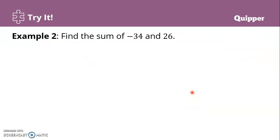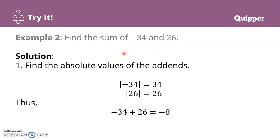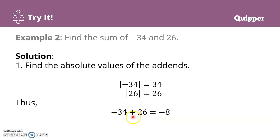Another example: find the sum of negative 34 and 26. Find their absolute values: the absolute value of negative 34 is 34, and the absolute value of 26 is 26. We have negative and positive, so different signs — we subtract. 34 minus 26 gives us 8. Copy the sign of the larger absolute value, which is negative. So the answer is negative 8.